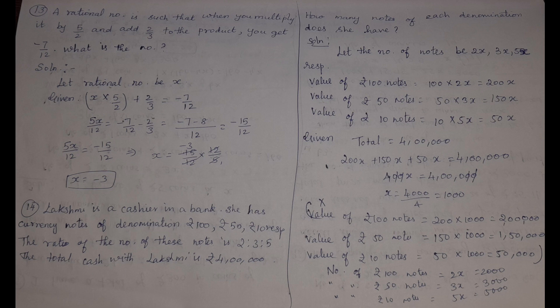Thirteenth problem: a rational number is such that when you multiply it by 5/2 and add 2/3 to the product, you get minus 7/12. What is the number? Let the rational number be x. So: (5/2)x + 2/3 = -7/12. Solving, x = -3.